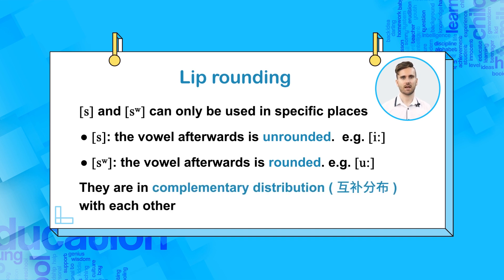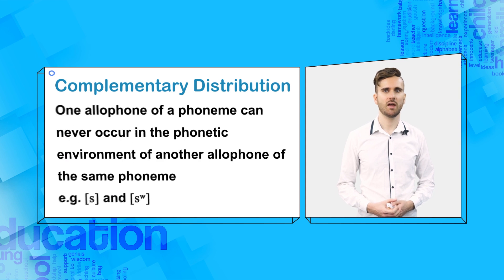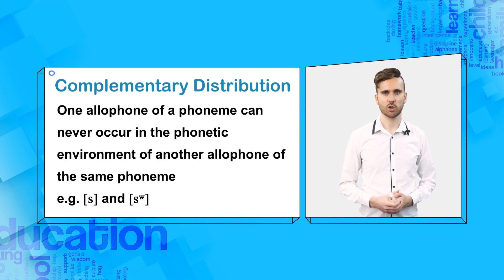As a result, we say that these allophones are in complementary distribution with each other. Complementary distribution is one of the most challenging concepts in phonology. Basically, it states that one allophone of a phoneme can never occur in the phonetic environment of another allophone of the same phoneme.